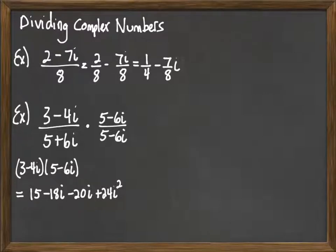Now remember, i squared is negative 1. So that 24i squared is going to be 24 times negative 1. So that's going to be minus 24. So we have 15 minus 24, which is negative 9. And then negative 18 minus 20 is minus 38i. So keep a hold of that for a moment. We'll come back to it.